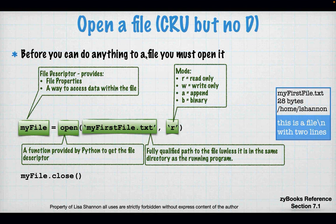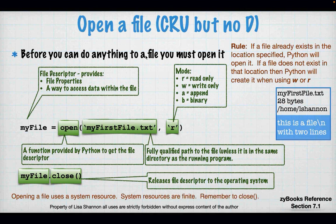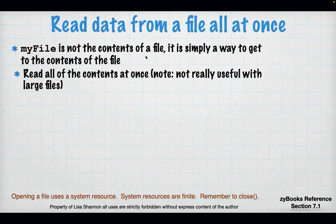You always have to remember to close. If you don't close, you do not return the system resource — the file descriptor — and you may not actually write any data that you expected to write. If you open it, you've got to close it. If the file already exists at the location specified, Python will open it. If it does not exist, Python will create it when using 'w' or 'a'. Remember to close your files.